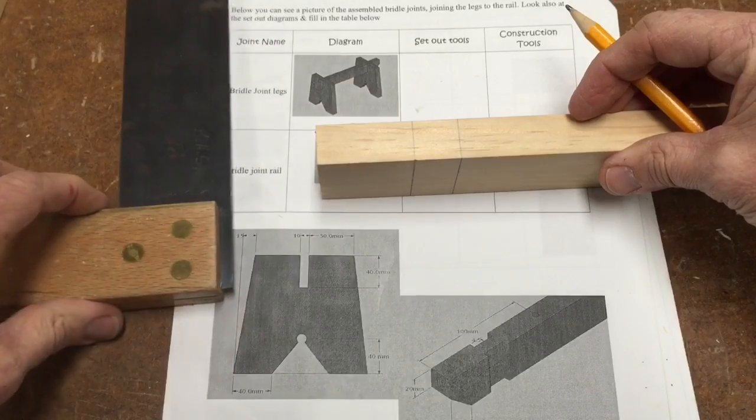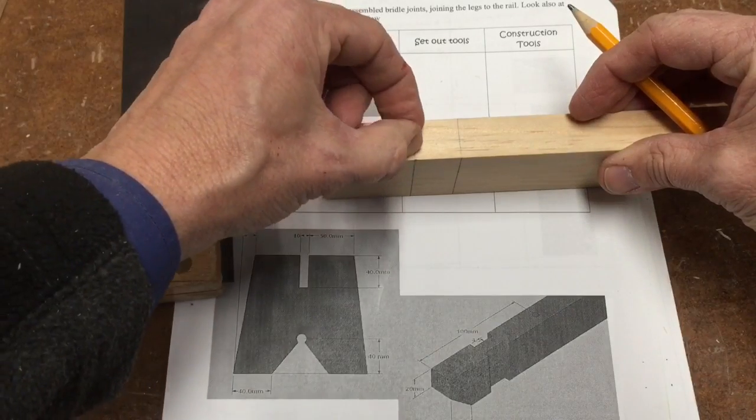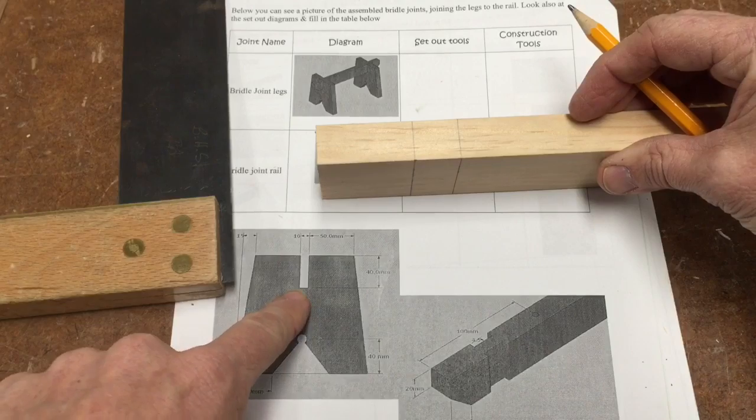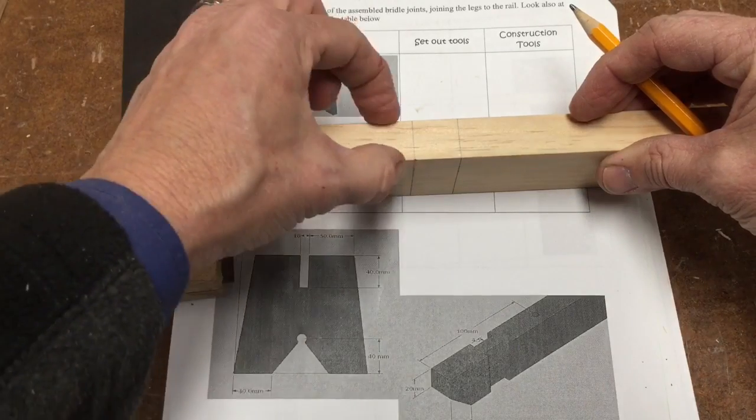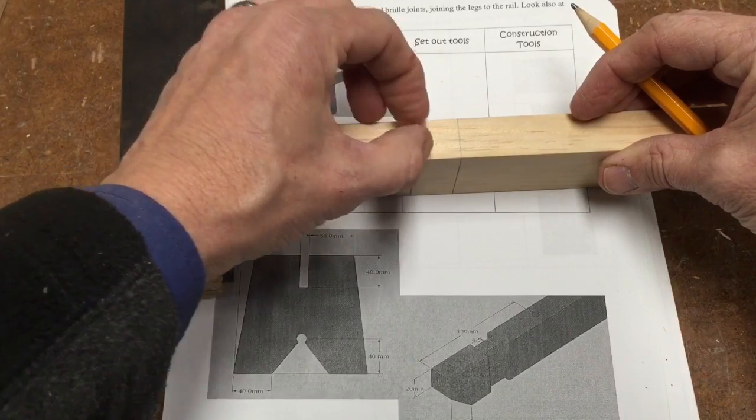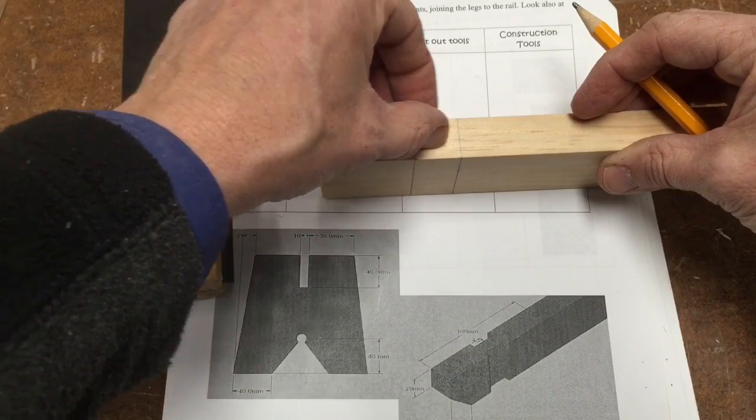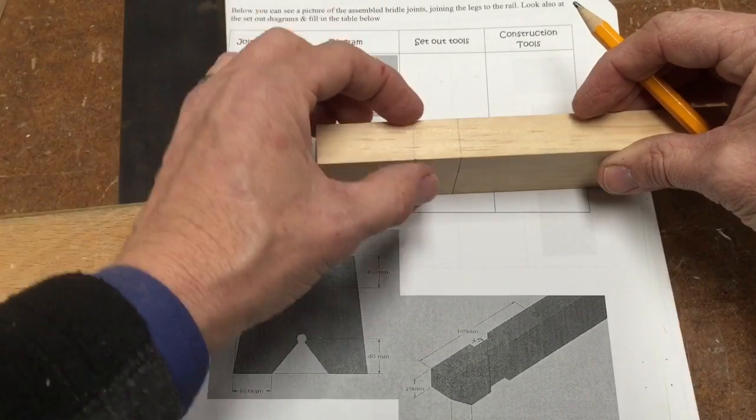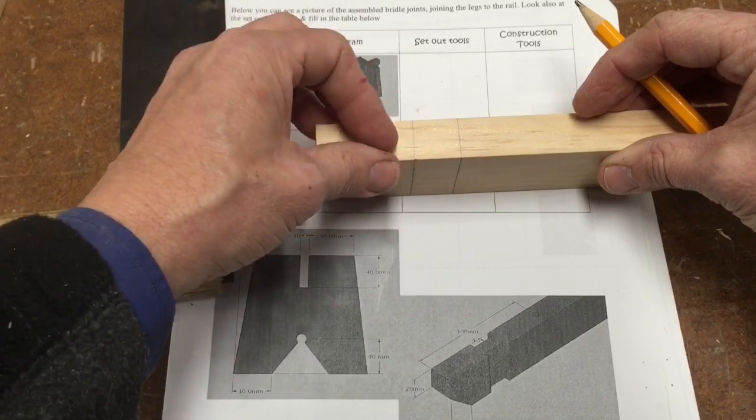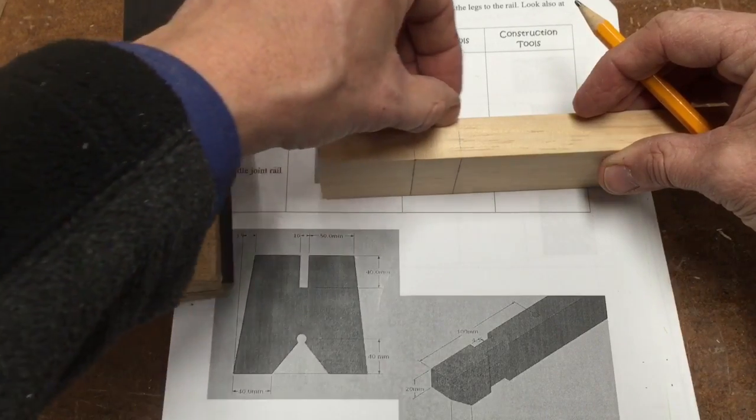Now I need to mark out how deep they're going to be. On our leg that space was 10 mil, this is 19 mil thick, and I want to have an even amount out of both sides. If I need to leave 10 mil in the bottom, 10 from 19 is 9. I need to half that, so each joint here needs to be roughly 4.5 mil deep.